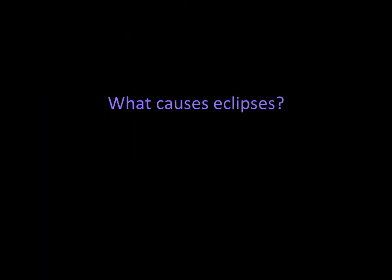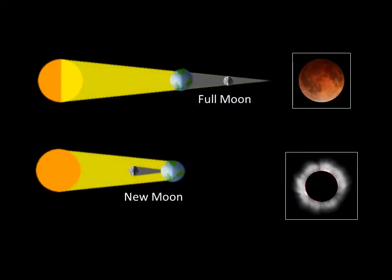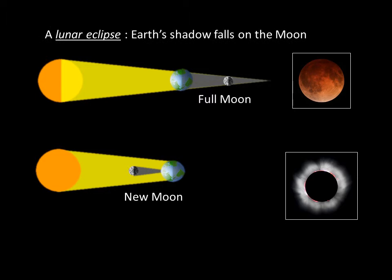Now we can talk about eclipses. Occasionally, the Moon, Earth, and Sun line up just right for an eclipse. There are two types: lunar and solar. A lunar eclipse is when Earth's shadow falls on the Moon. Earth is much larger than the Moon, so during a lunar eclipse, Earth's shadow can cover the entire Moon. Therefore, anyone on the night side of Earth can see a lunar eclipse.